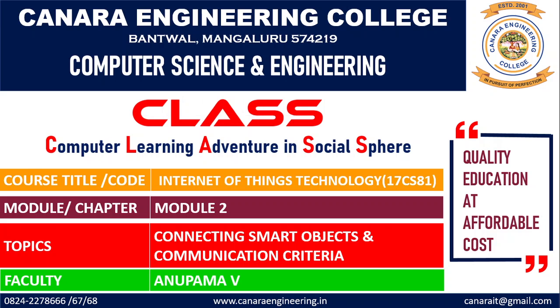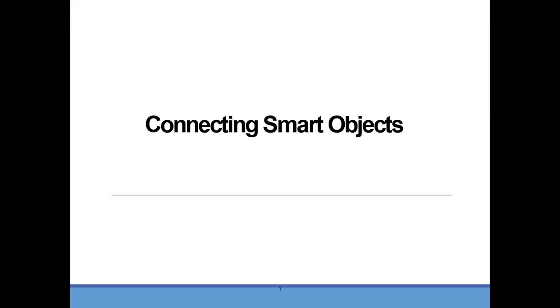Welcome to this video lecture on Internet of Things Technology. In this session, I will discuss the topic of connecting smart objects and communication criteria. IoT devices and sensors must be connected to the network in order to utilize the data generated by them. Let us look into the characteristics and attributes that should be considered when selecting and dealing with connecting smart objects.